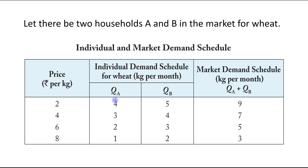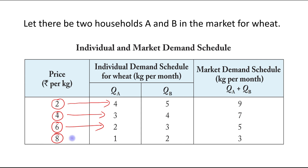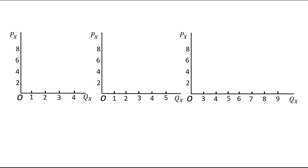Now we will draw the individual demand curve for consumer A. At a price of rupees 2, the quantity demanded by individual A is 4. At a price of 4 it is 3, at a price of 6 it is 2, and at a price of 8 it is 1. We will plot these values in the first panel. At a price of 2 it is 4, so we mark this point.